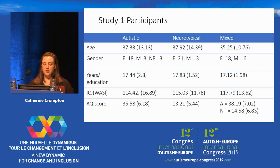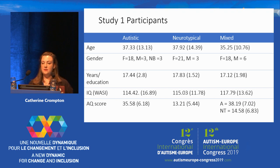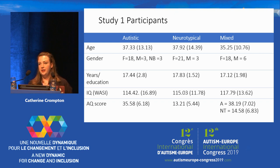Here's a quick description of the participants in the study across the autistic, neurotypical, and mixed groups. The table shows means and standard deviations. The average age of participants was mid-30s, we had more women than men, and years of education and IQ were fairly high. Each of the three groups were matched on gender, age, years of education, and IQ. As expected, our autistic participants showed significantly higher levels of autistic traits as measured by the AQ than our neurotypical participants.